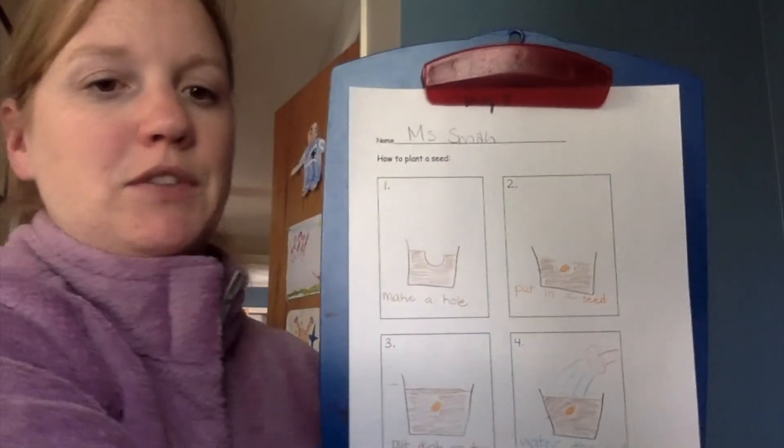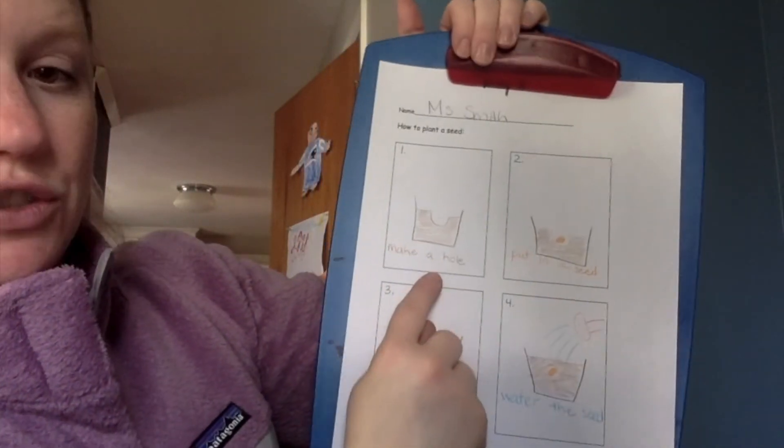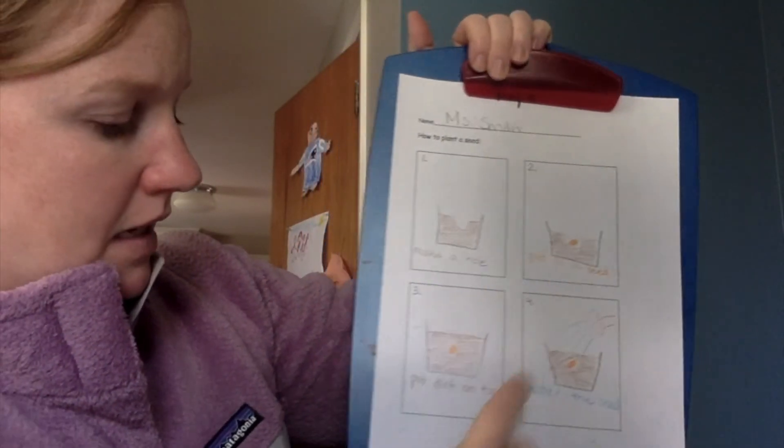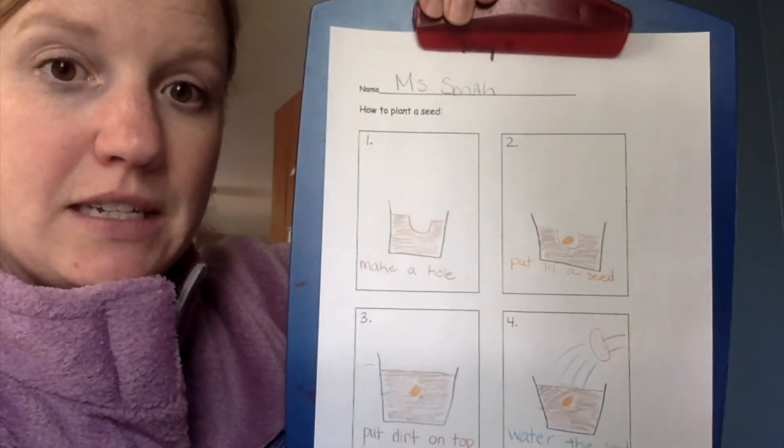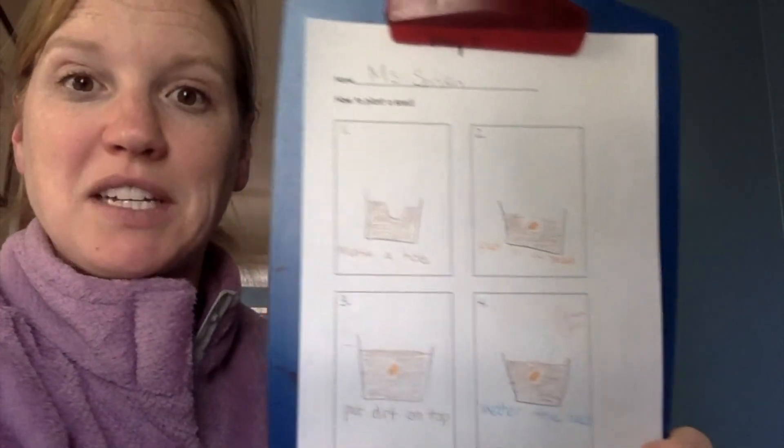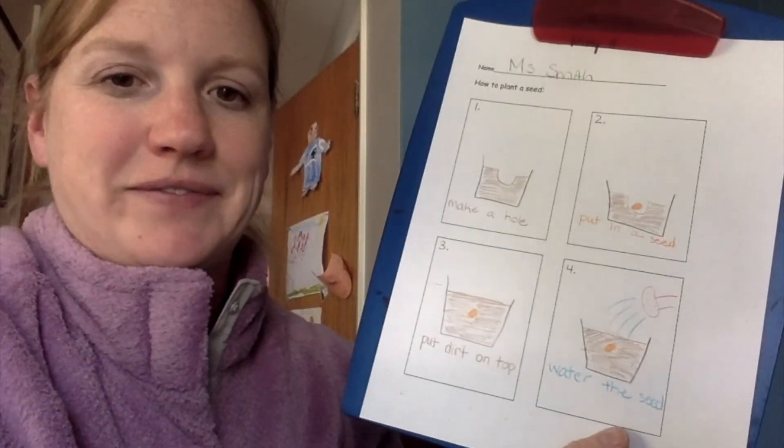So those are the steps for how to plant a seed. First you make a hole, put in a seed, put dirt on top, and then water the seed. So send us a picture if you do this one. So send us an email.